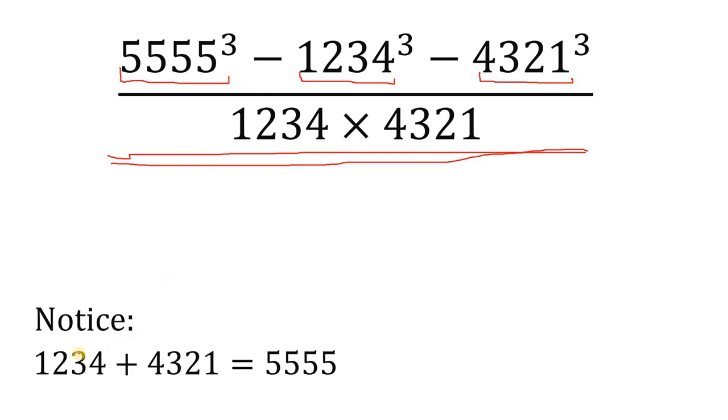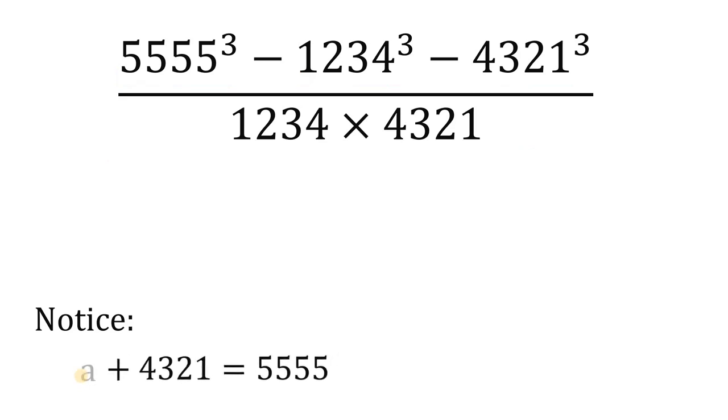So now, if we let a equal 1234 and b equal 4321, we get a plus b equals 5555.